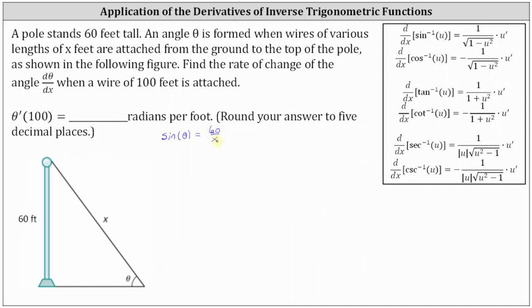But because we're trying to find dθ/dx, we need to write theta as a function of x, and therefore we need to solve the equation for theta by taking the inverse sine of both sides of the equation. Simplifying on the left, inverse sine of sine theta equals theta, giving us θ = arcsin(60/x).